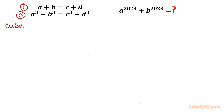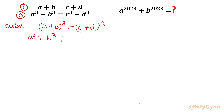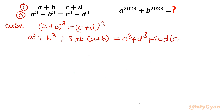I am going to take the cube of equation 1, writing the left-hand side as a plus b whole cube and the right-hand side as c plus d whole cube. Using the algebraic identity, the left side expands to a cubed plus b cubed plus 3ab times (a plus b), and the right side gives c cubed plus d cubed plus 3cd times (c plus d). Now I use equation 2, which states a cubed plus b cubed equals c cubed plus d cubed.